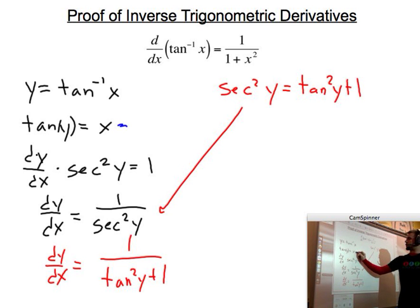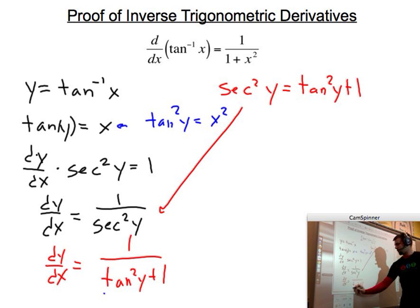So, if we look at this statement, and I square both sides, we have tangent squared of y equals x squared, if you square both sides there. So, that will go in for that tangent squared y down here.